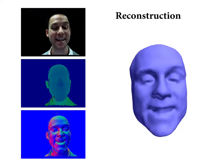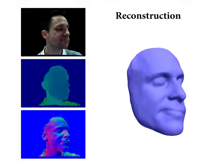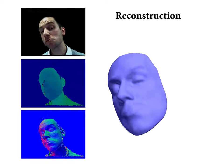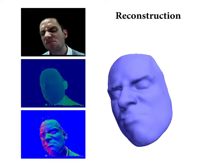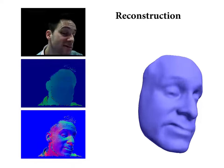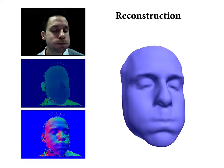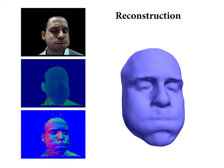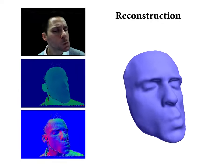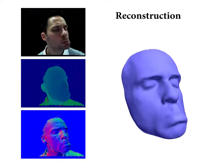Let's have a closer look at the input data. On the left-hand side we see color, depth, and normal input of our real-time scanner. Our approach directly incorporates deformation changes as they are observed by our camera. Since our approach does not rely on future information, our reconstruction is immediate.